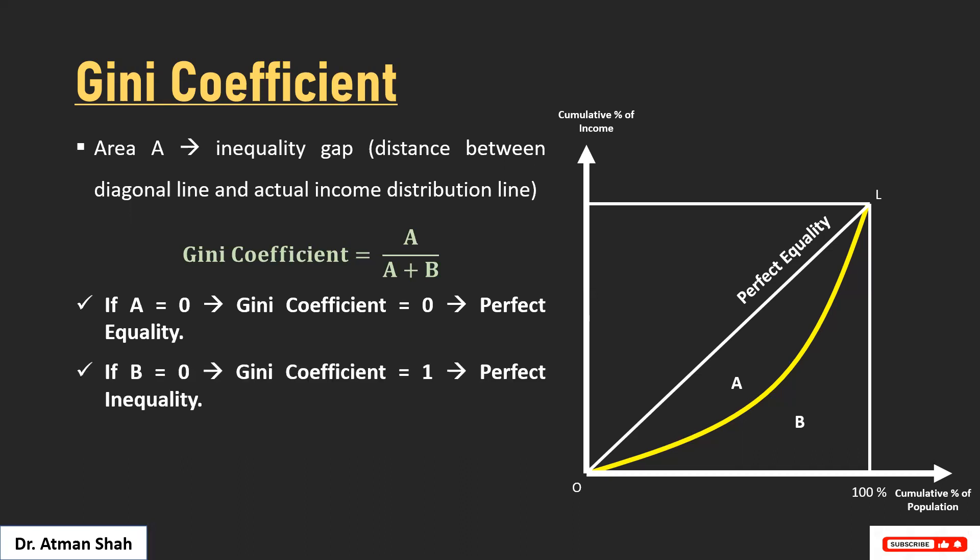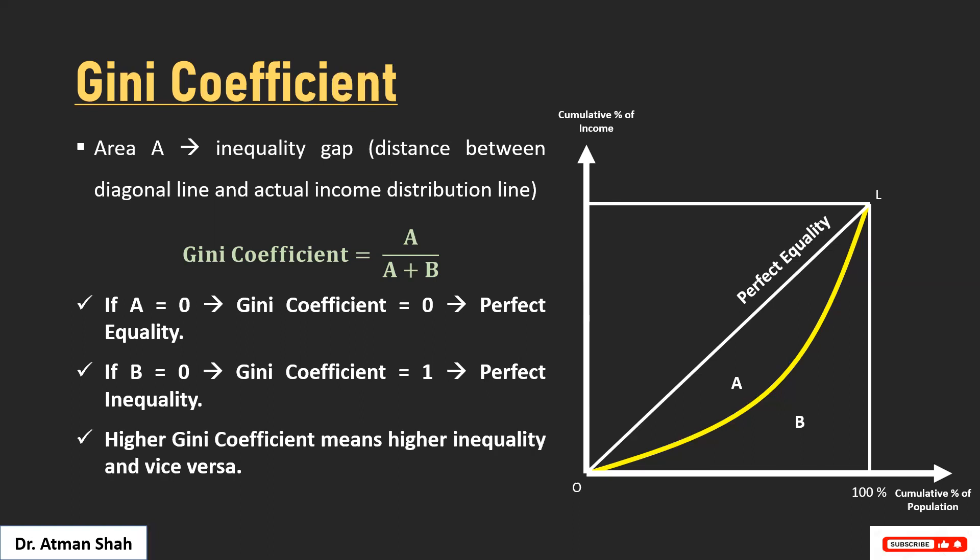On the other hand, if B is equal to zero, then the Gini coefficient is equal to one. That shows perfect inequality — meaning only one person has the total income of the economy. So a higher Gini coefficient means higher inequality, and vice versa. If you find this video useful, kindly like, share, comment, and subscribe. Thank you.